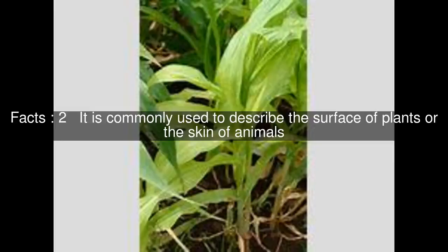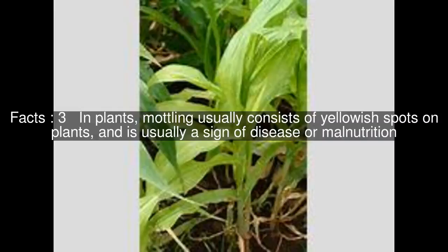In plants, mottling usually consists of yellowish spots, and is usually a sign of disease or malnutrition. Many plant viruses cause mottling, some examples being: